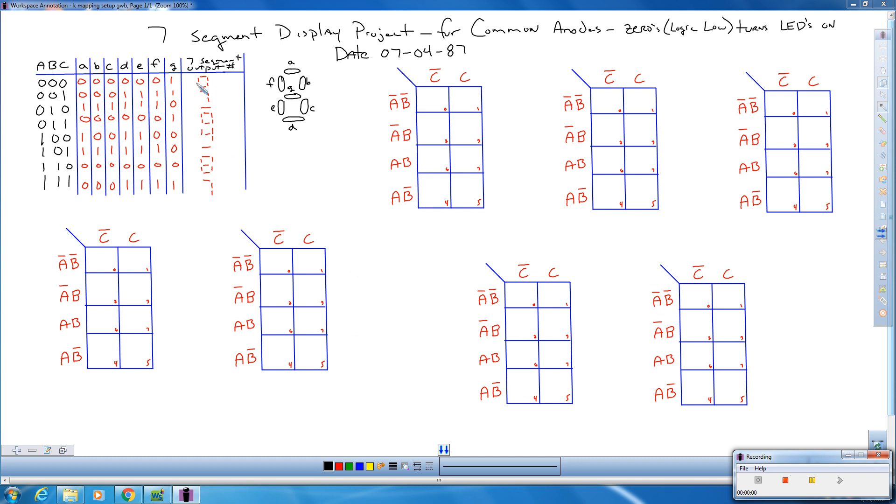Okay, now that we've created our truth table, we need to K-map each one of these segments to get the simplified circuit. So we're going to K-map A first. So segment A, and what's going to turn it on in each one of these states? Alright, so the K-map...